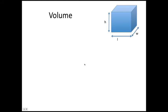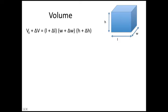Now we're going to derive the volume expansion from the linear expansion. The volume of a rectangular prism is length times width times height. The final volume as we heat the prism is the initial volume plus the change in volume, which equals the final length (length plus change in length), times the final width (width plus change in width), times the final height (height plus change in height).